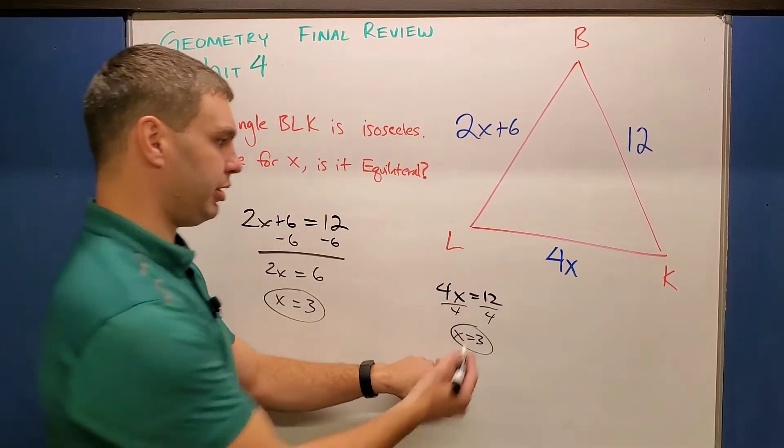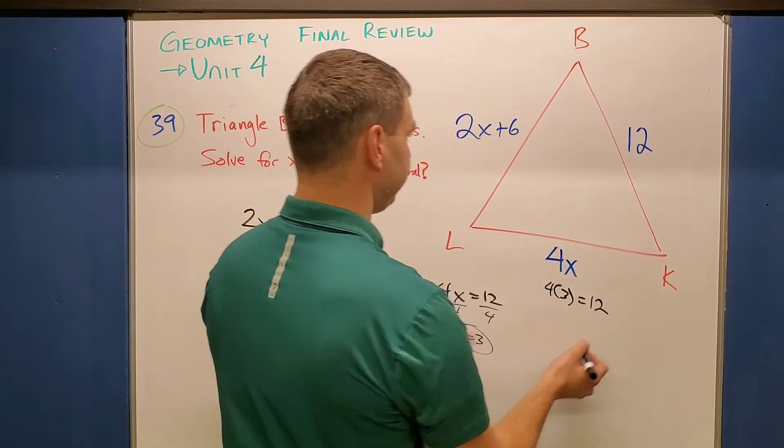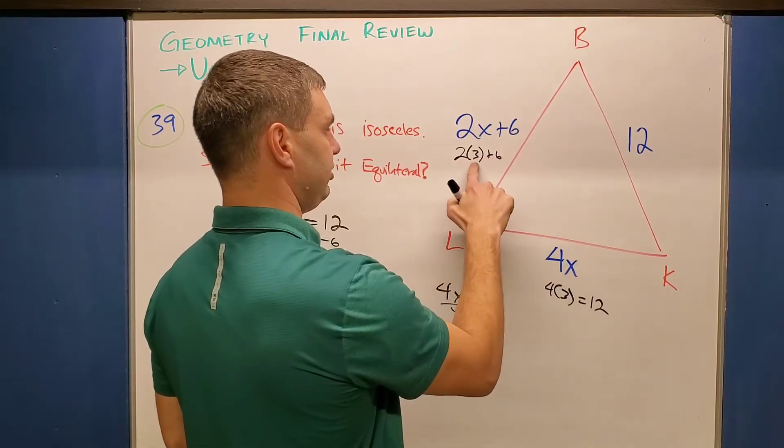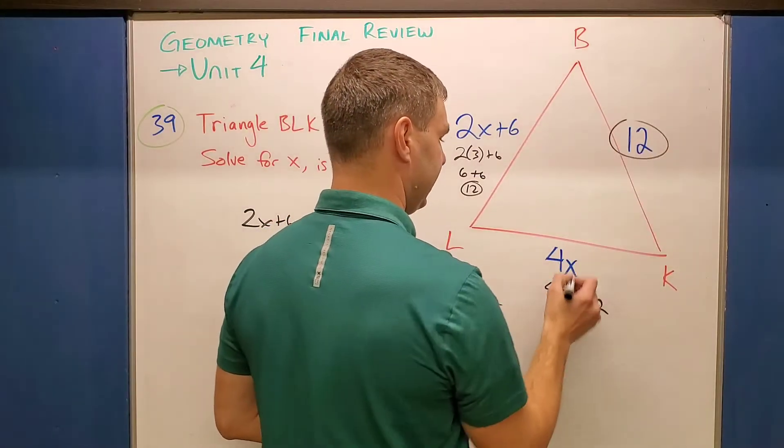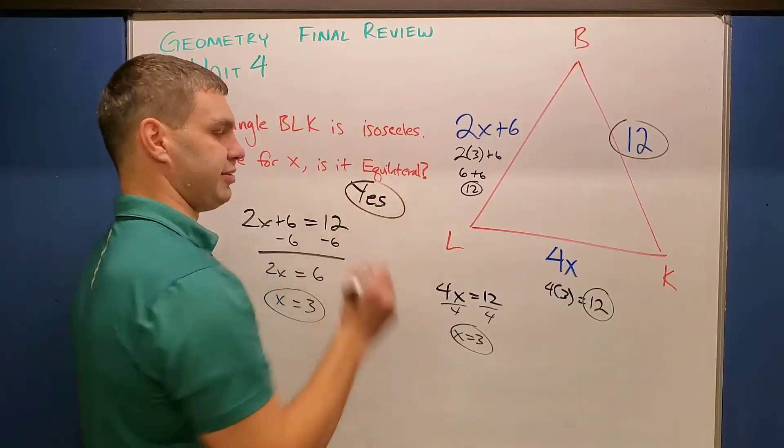Now I have to actually do it one more time, and that is by setting these two equal to each other. So here, if I go 4X equals 12, then right away, if I divide by four, X also equals three. So it looks like either way, X is going to be three. And because of that, if I plug in three right here, four times three is 12. And up in this one, two times three plus six, two times three is six, six plus six is also 12. So all the sides are 12. So therefore the question, is it equilateral? Our answer is yes.